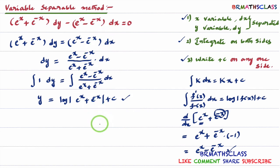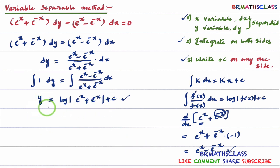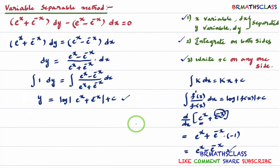If you try to match the textbook answer, the answer may vary from person to person. In place of c, we can write log c also, because c is an arbitrary constant and log c is also an arbitrary constant. To avoid confusion, stop here — this is the general solution of the given differential equation.